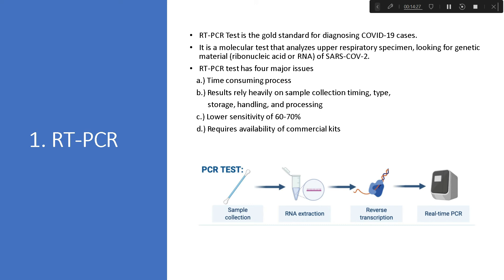RT-PCR is the gold standard method for diagnosing COVID-19. It is a molecular test that analyzes upper respiratory specimens to look for genetic material of SARS-CoV-2. However, it has four major issues: it is very time-consuming — sometimes taking more than 48 hours — during which patients have died before results arrived. That is a major drawback.